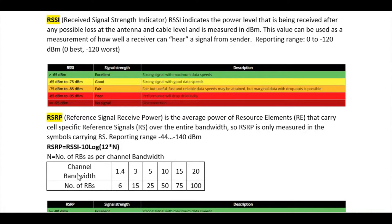For channel bandwidth, if it is 1.4 MHz bandwidth, the number of resource blocks will be 6. If it is 20 MHz bandwidth, the number of resource blocks will be 100, and so on.